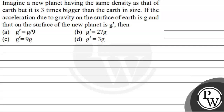Hello, let us read the question first. Imagine a new planet having the same density as that of Earth, but it is three times bigger than the Earth in size. If the acceleration due to gravity on the surface of Earth is g, and that on the surface of the new planet is g dash, then we will find the relation between the two.